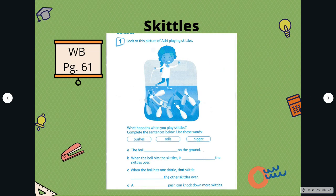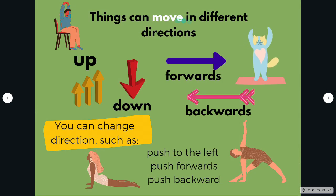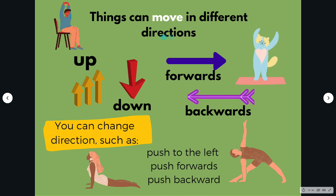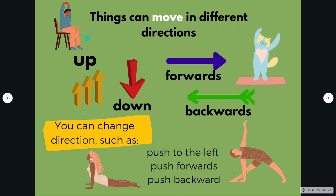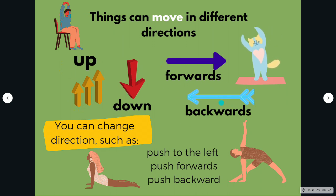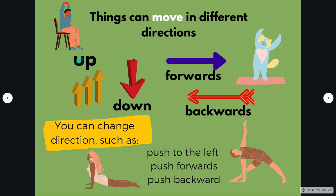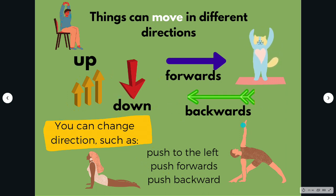Complete workbook page 61 to find out what happens when you play Skittles. Direction means the way something moves or the path it takes. You can use your body and apparatus to show that things can move in different directions such as up, down, forwards, backwards, and sideways to the left or the right.